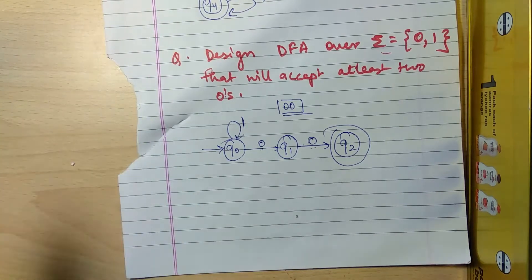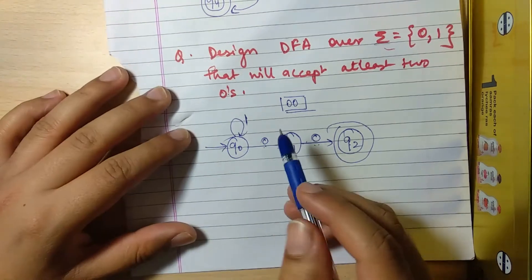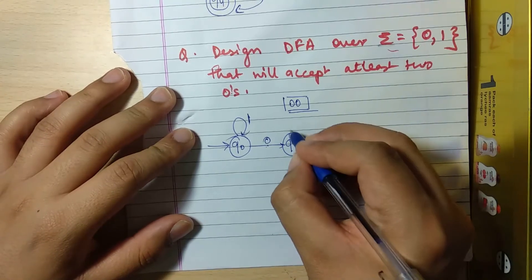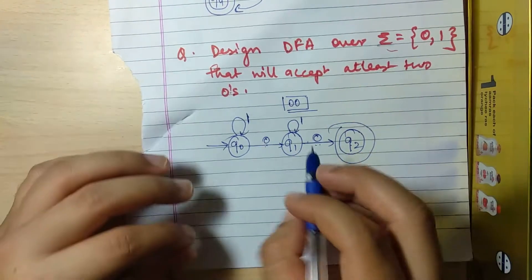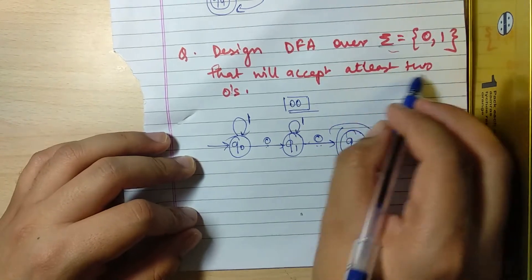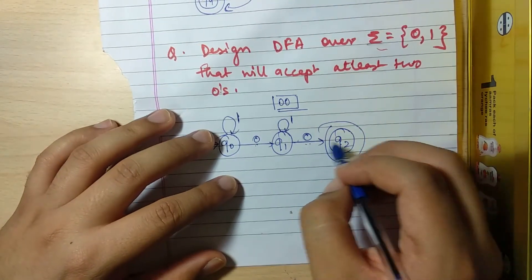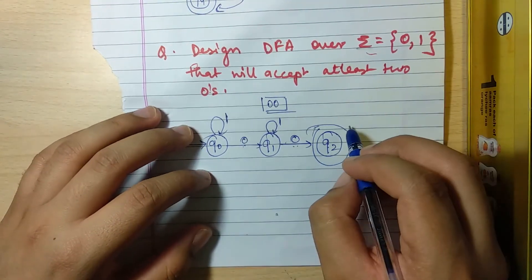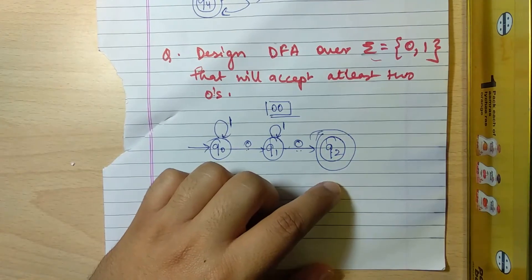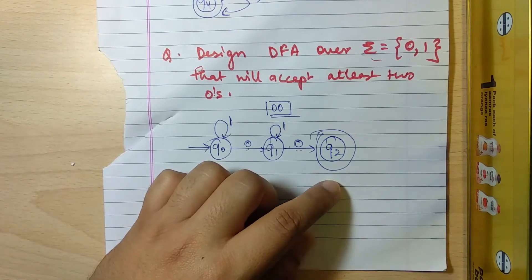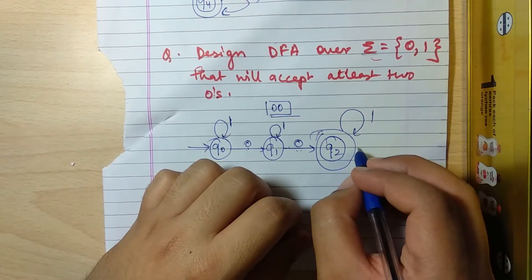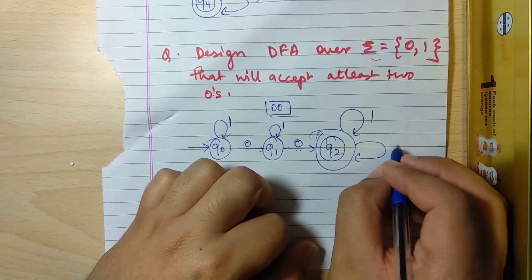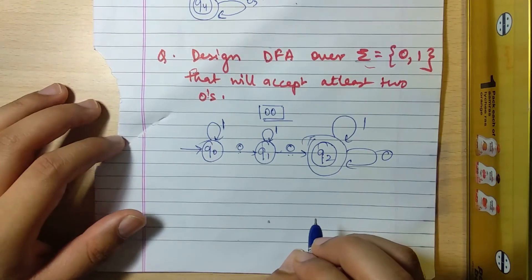Now complete the other transitions. For q1, if '1' is encountered, send it back — it doesn't matter, we're just completing the criteria of at least two zeros. For q2 (the final state), when '1' is encountered send it back to itself, and when '0' is encountered send it back to itself as well. Our DFA is complete.